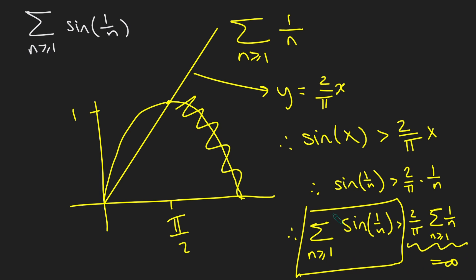So pretty cool proof, if you ask me. And this inequality here is slightly lesser known. Everyone knows that sine of x is less than x for positive x. But this inequality is also true if x is between 0 and pi by 2.